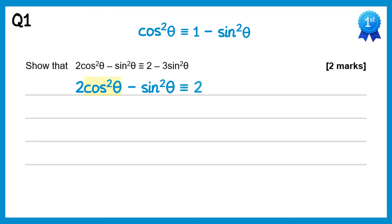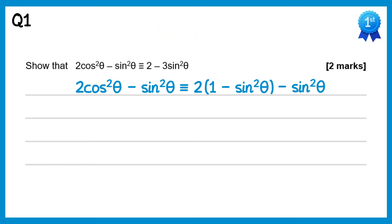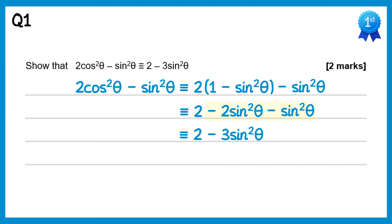So we've got 2 lots of cos²θ, but remember that's 1 minus sin²θ, minus sin²θ. If we expand the brackets: 2 times 1 is 2, and 2 times minus sin²θ is minus 2sin²θ, and then we've got the other minus sin²θ at the end. Collecting these terms together we end up with 2 minus 3sin²θ, which is what we needed to show.